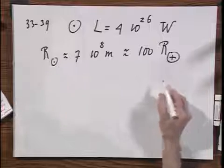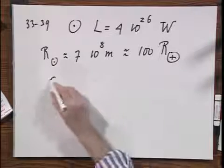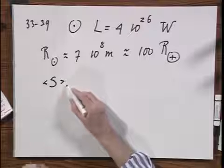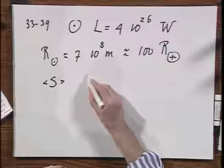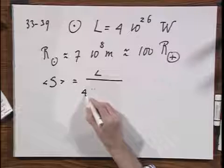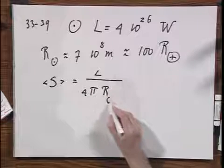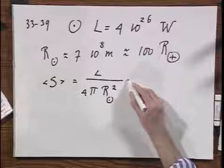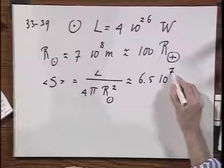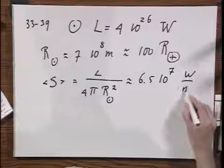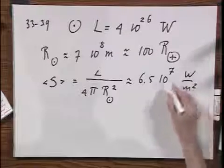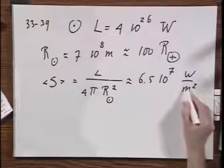If you calculate the mean Poynting vector at the surface of the sun itself, you'll have to take L divided by 4 pi r of the sun squared, and that gives you a number of 6.5 times 10 to the 7 watts per square meter coming out of the surface of the sun — 6.5 times 10 to the 7 joules per second.